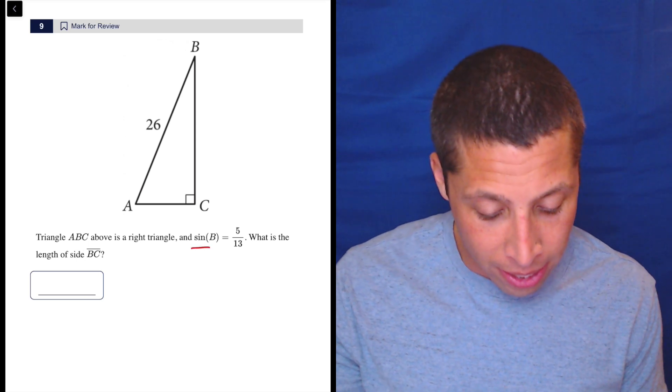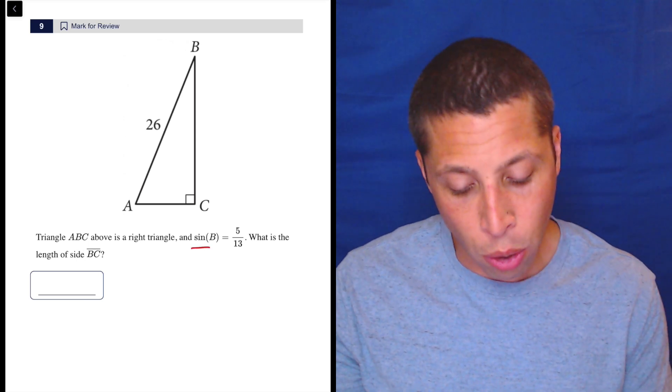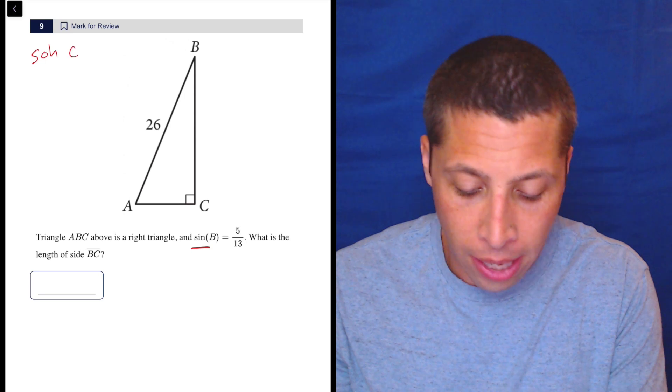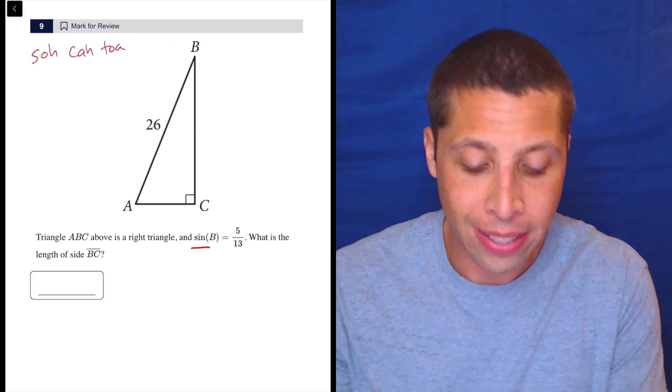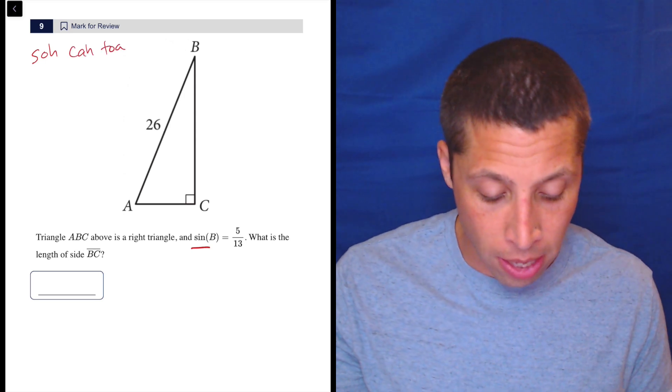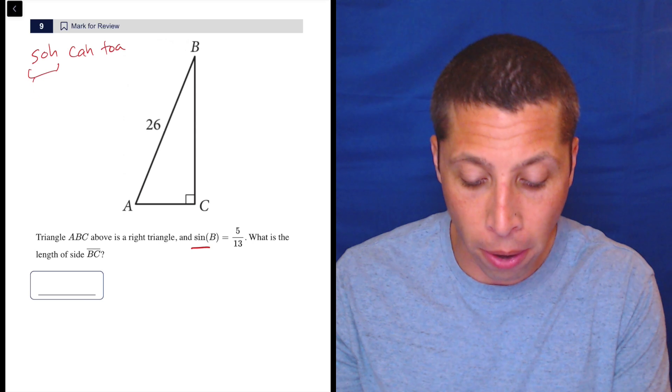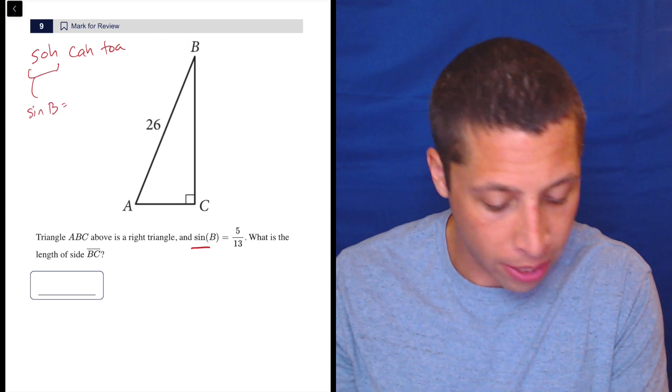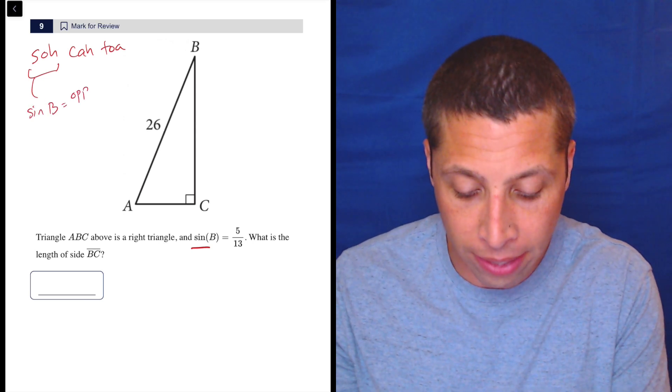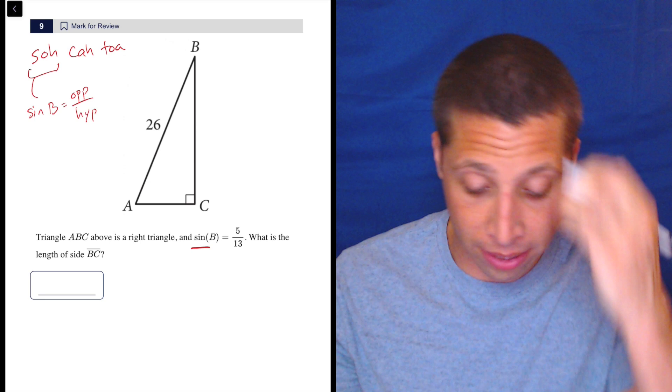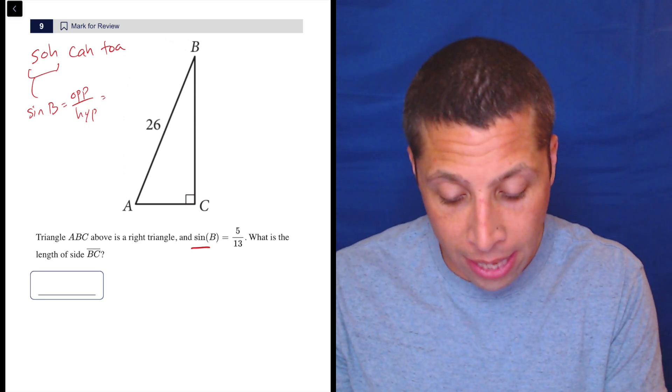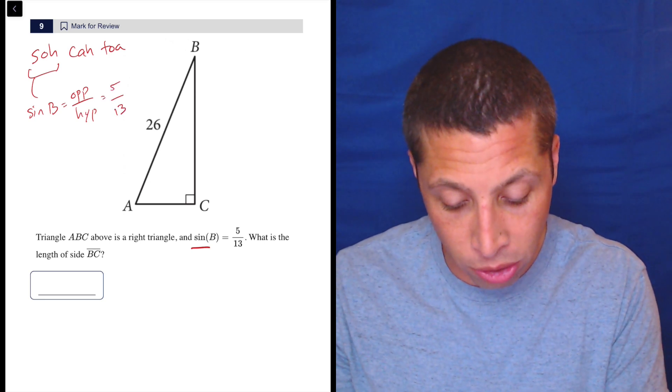Sine B is 5 over 13, so we need to remember that SOHCAHTOA tells us what each of these things means. Sine is the SOH part, so the sine of B is the opposite side over the hypotenuse. That means the opposite is 5 and the hypotenuse is 13.